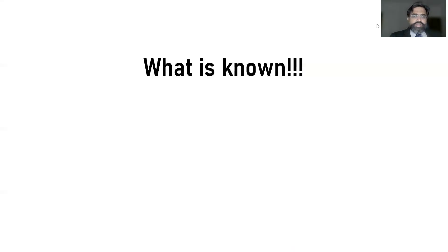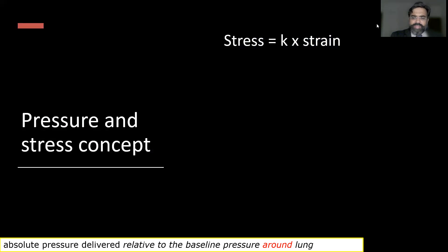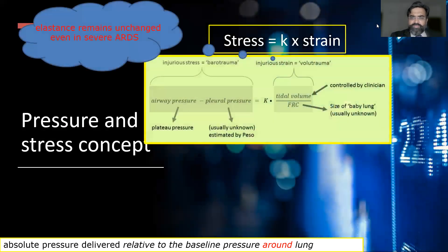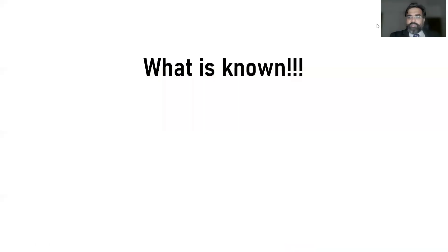What is known is that total lung capacity is reached at a strain of 2.5. With A equal to 12 and strain of 2.5, the product is 30 — which means a plateau pressure of around 30 is acceptable at that stage. That is the conceptual basis behind our plateau pressure limits.